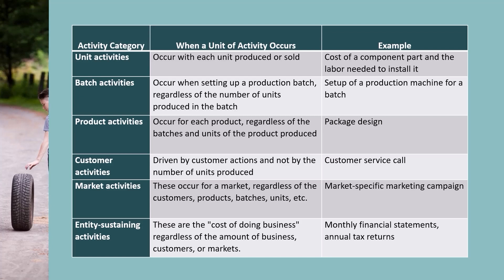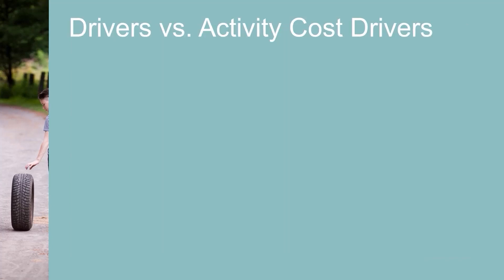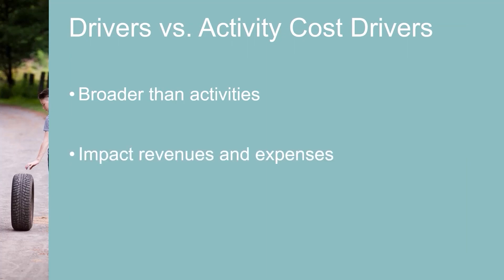A market activity occurs for a market regardless of the customers, products, batches, etc. — for example, a market-specific marketing campaign. I show all sorts of examples on this table. These types of activities are a subset of drivers. Drivers are much broader than activities and activity cost drivers. Drivers impact both revenues and expenses, while activities in ABC tend to focus on costs.